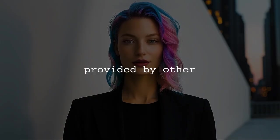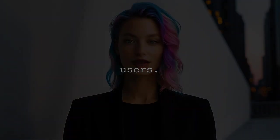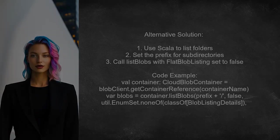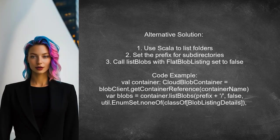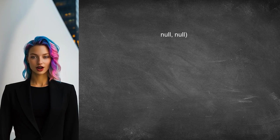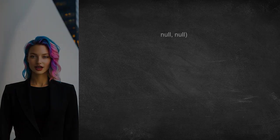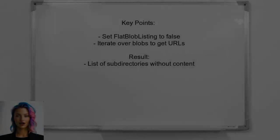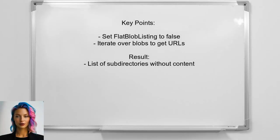Now let's look at the answers provided by other users. An alternative approach shared by another user involves using Scala to list only the folders in a blob storage container. They suggest using the list blobs function with a specified prefix, which represents the path of the subdirectories you want to find. By setting flat blob listing to false, you ensure that only the subdirectories are returned without their contents. You can then iterate over the blobs to get their URLs.